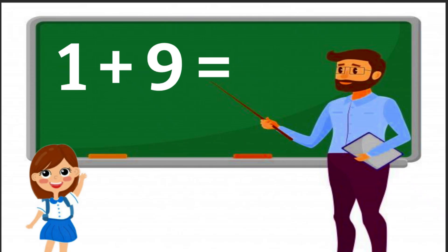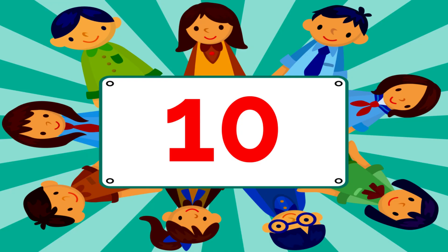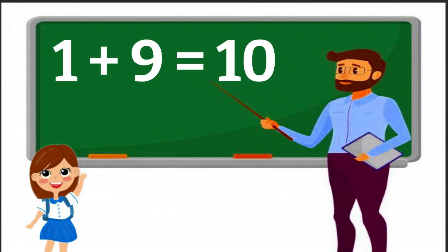We have 1 plus 9. To solve this, we add 1 and 9 together. 1 plus 9 equals 10! You're doing great! Keep it up!